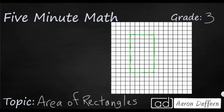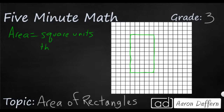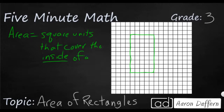So first, let's define this term. Area — what we're talking about with area is the square units, and we literally are talking about squares, square units that cover the inside. That's going to be important, because the perimeter is the outside — that's the sides on the outside. But the square units that cover the inside of a shape, that is the area.